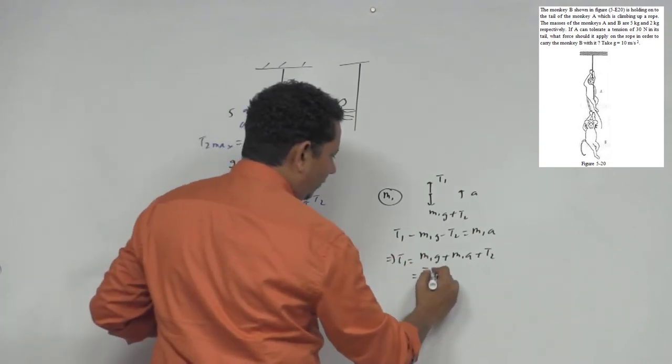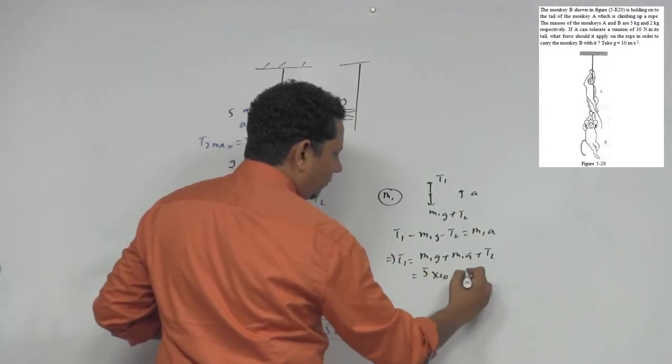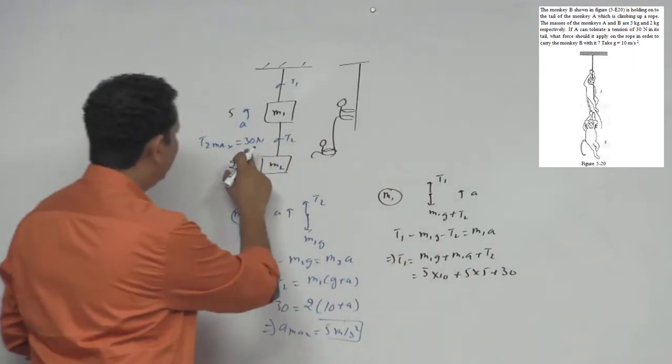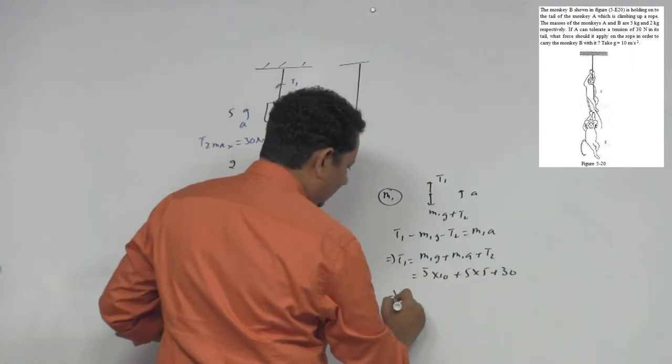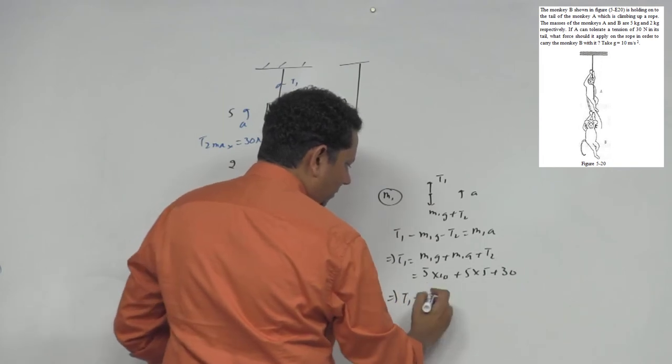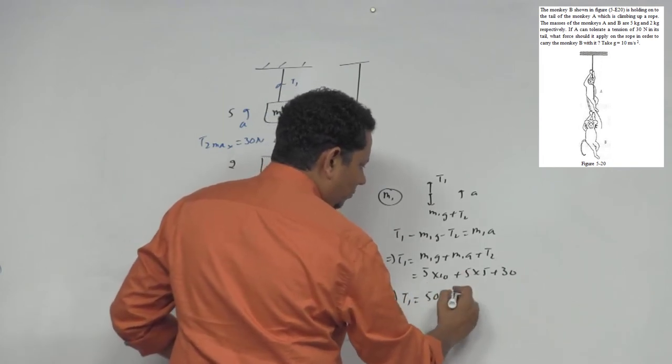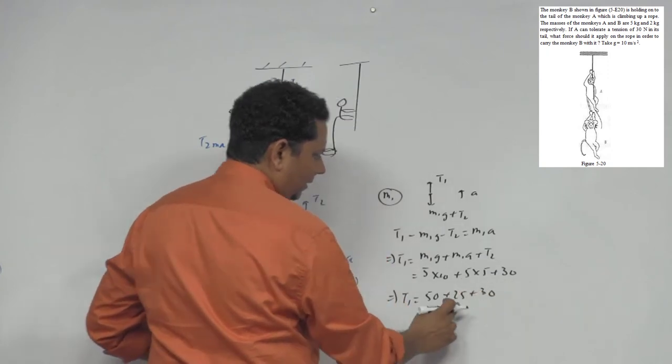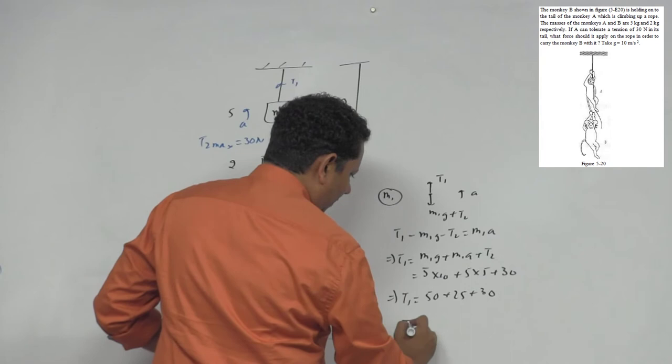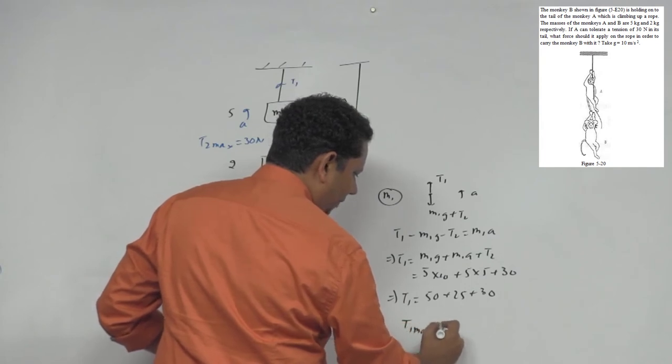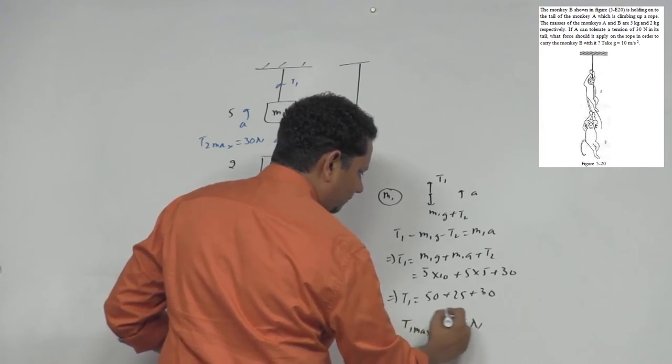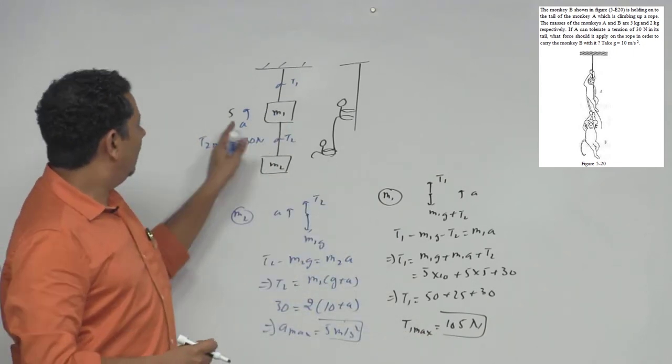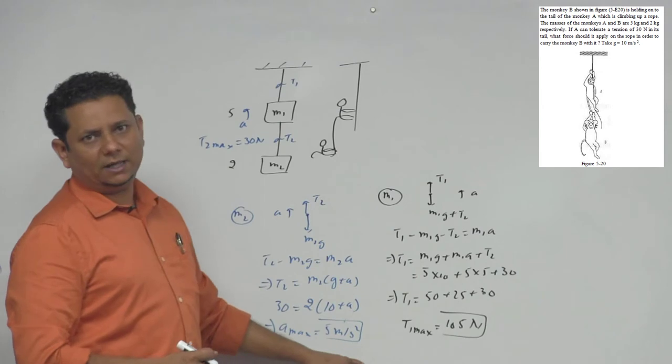Is mein data rakh deegi hai. Toh m1 aapne ko dhiya hua hai 5 multiplied by 10, m1 aapka 5, acceleration aapka 5 aaya, plus t2 30, joh aapki maximum value possible hai. So which implies aapka t1 hai, woh aajayega, yeh bana aapka 50, plus 25, plus 30. So yeh bana gaya 30 plus 25, toh aapki t1 ki joh maximum value hai, woh aagay 105 newton. Toh yeh aapki t1 ki maximum possible value hai, jis se aapka t2 maximum, aur yoh acceleration maximum ha raha ho.